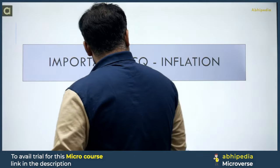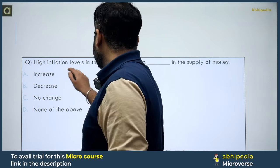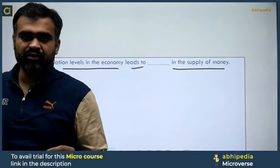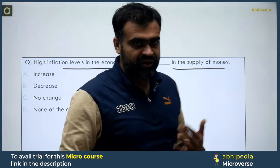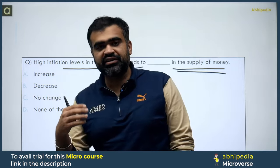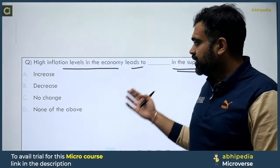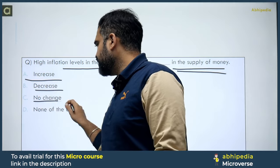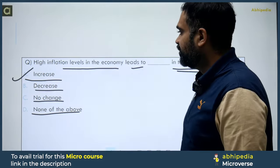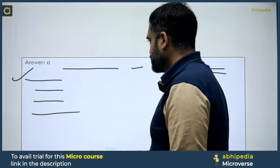Today we have important MCQs related to inflation. The first question: high inflation level in the economy leads to dash in the supply of money. This is a very basic question — inflation ka impact kya padta hai economy ke andar. Inflation se obviously money supply badhega. High level inflation means bohut zyada paisa ho jaana market ke andar. Options are: increase, decrease, no change, and none of the above. The correct answer is definitely increase — high level of inflation in the economy leads to increase in the supply of money. The answer will be A.